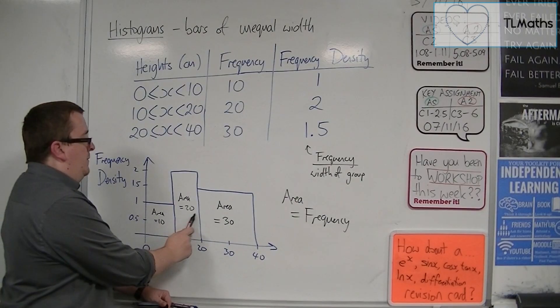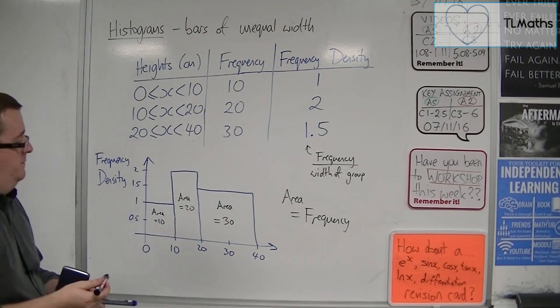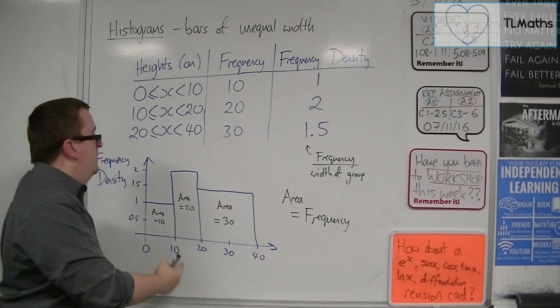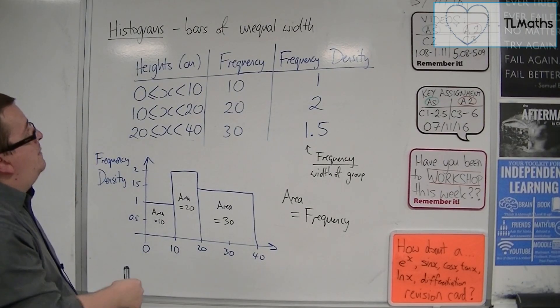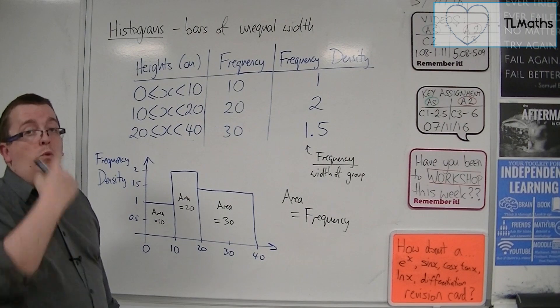And this gives you the frequencies, 10, 20, 30. And that is how we draw a histogram where the bars are of unequal width.